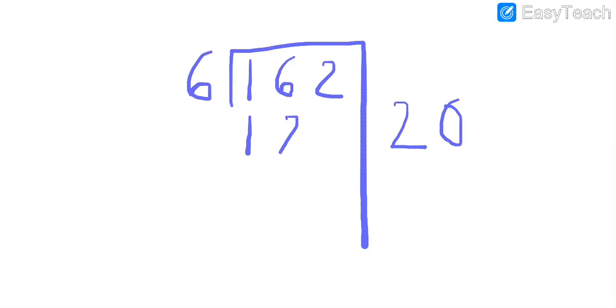All right, now go ahead and find the difference. 2 minus 0 is 2, 6 minus 2 is 4, and 1 minus 1 is 0. Good job. You can write the 0 as a placeholder if you want to, doesn't make any difference.